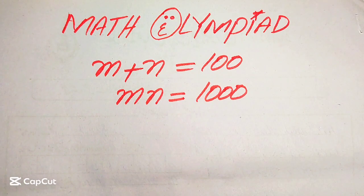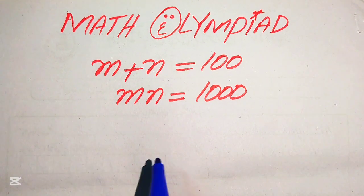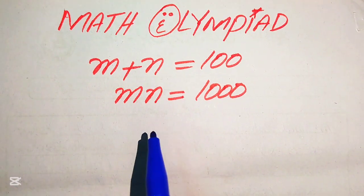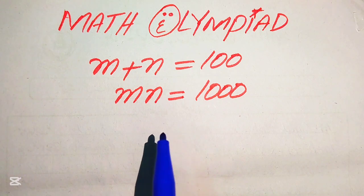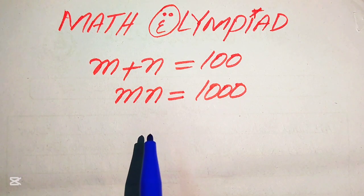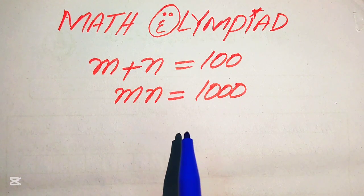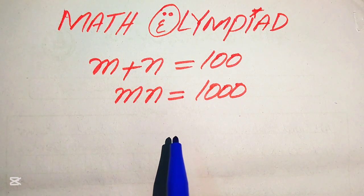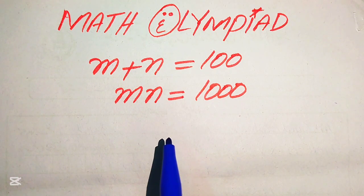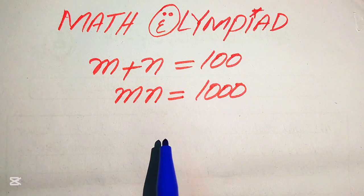Hello everyone, welcome to solve this nice math algebra problem. Here we have m plus n equals 200 and m times n equals 1000, and we solve this problem for the values of m and n.